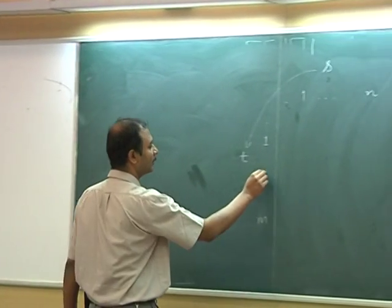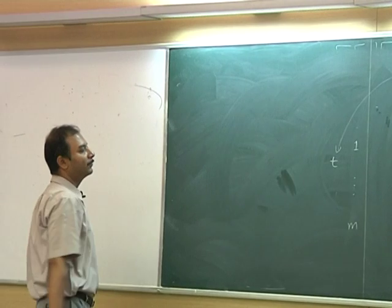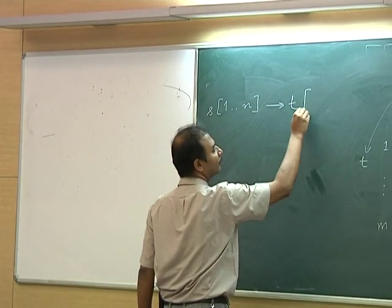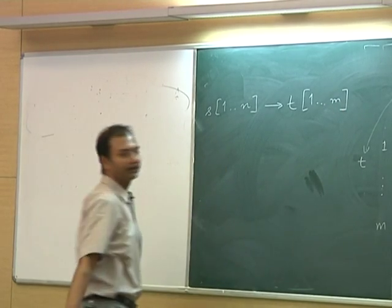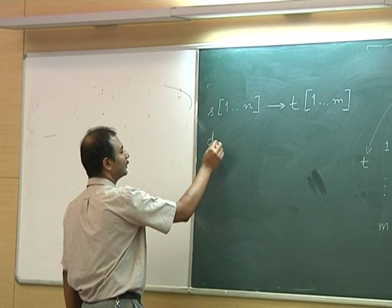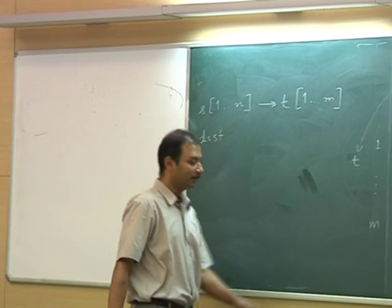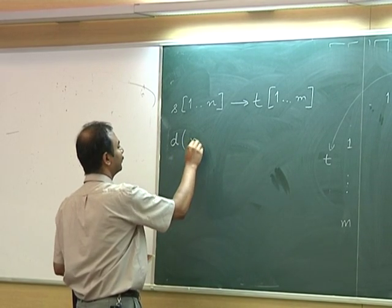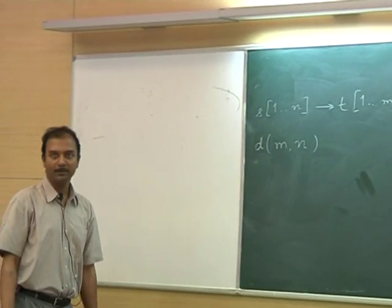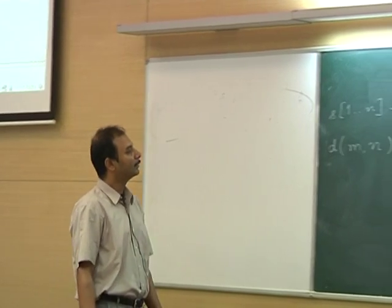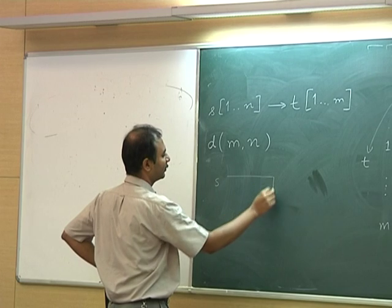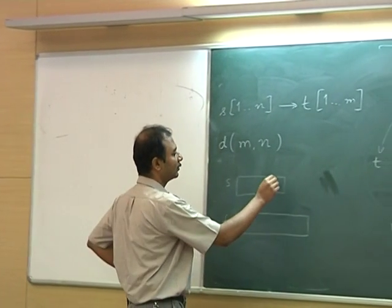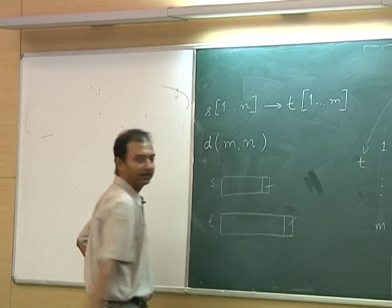The question we are asking is: what is the smallest number of operations to transform S of 1 through N to T of 1 through M? We call that distance — in the code it's called 'dist', and in symbols just 'd'. That's the distance. We call that d of (N, M). So here is the string S, here is the string T, and to answer that question we first ask: what is the last character in each of them?